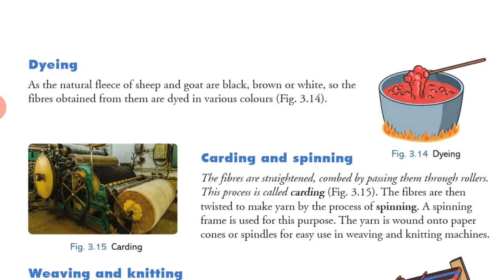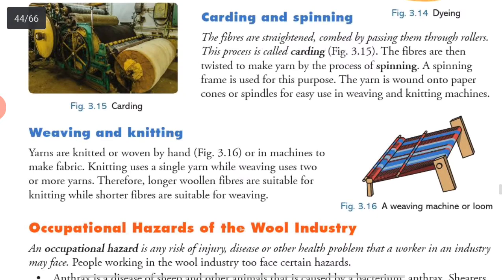The yarn is wound onto paper cones or spindles for easy use in weaving and knitting machines. Yarns are knitted or woven by hands or by machines to make fabric. Knitting uses a single yarn while weaving uses two or more yarns. Therefore longer woolen fibers are suitable for knitting and shorter fibers are suitable for weaving.